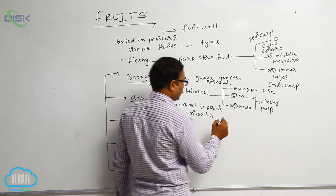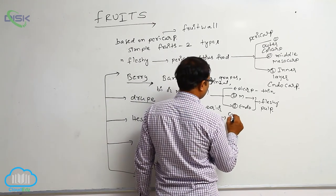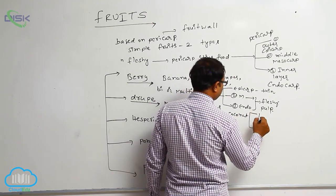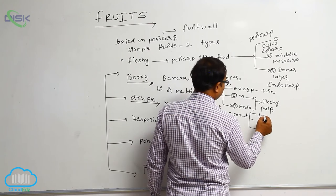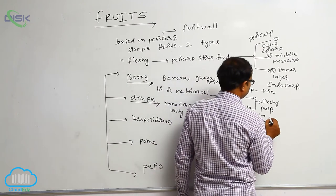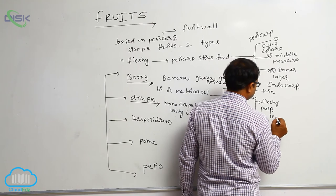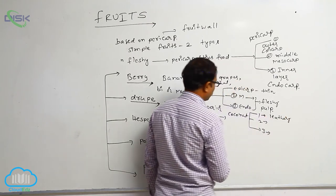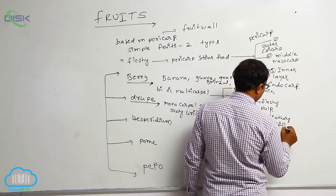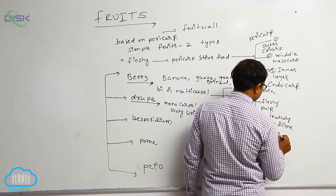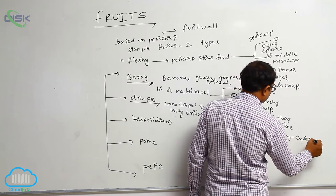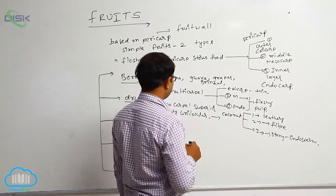In drupe, the example is coconut. The pericarp is divided into three layers: epicarp, middle mesocarp, and inner endocarp. The epicarp is a leathery structure, the middle mesocarp is fibrous, and the inner endocarp is a stony layer. Food material is stored in the form of endosperm. That is known as coconut.